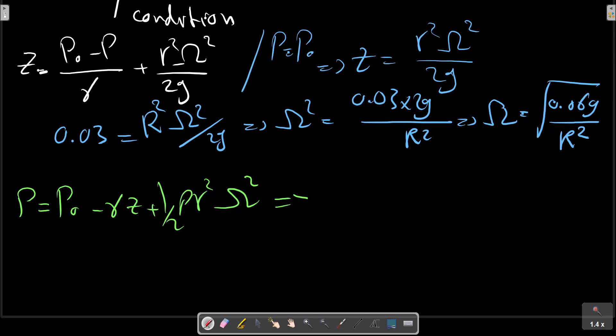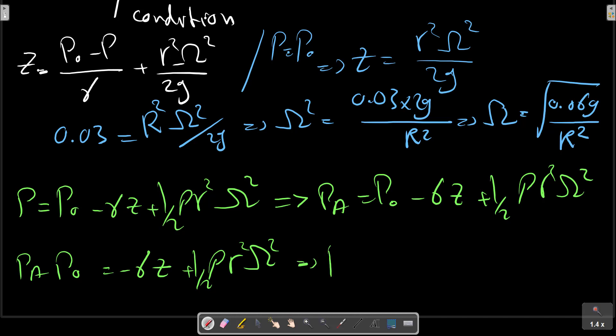So we can write, and the gauge pressure PA is PA minus P0 equals to minus gamma Z plus... So P gauge A equals to...